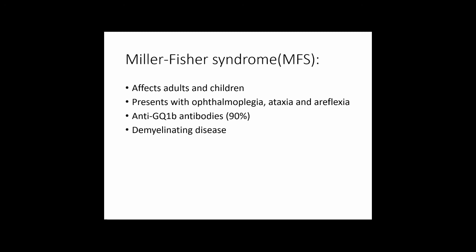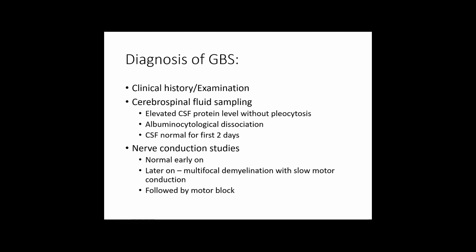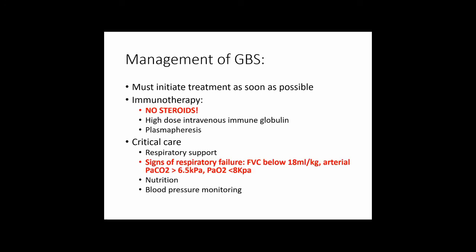A patient presenting with acute onset ophthalmoplegia following a viral infection or diarrhea should raise suspicion of Miller Fisher syndrome. Diagnosis of GBS is clinical — based on history and examination. CSF sampling shows albuminocytological dissociation: raised protein without raised white blood cell count. Nerve conduction studies may be normal early on but as the disease progresses there is multifocal demyelination with slowed motor conduction. Management should be initiated as soon as possible due to the risk of respiratory compromise. Notably, steroids are not used in GBS and may in fact worsen the condition.